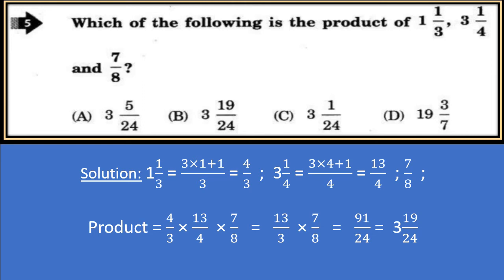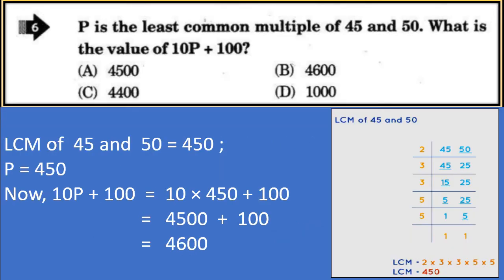Which of the following is the product of 1⅓, 3¼, and 7/8? Converting: 1⅓ = 4/3 and 3¼ = 13/4. Product = 4/3 × 13/4 × 7/8. The 4s cancel, giving 13/3 × 7/8 = 91/24, which simplifies to 3 and 19/24. The correct option is B.